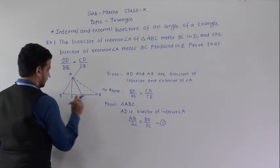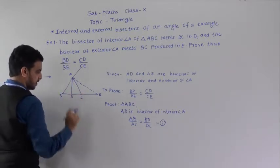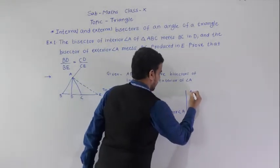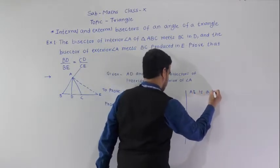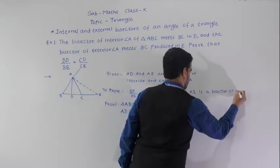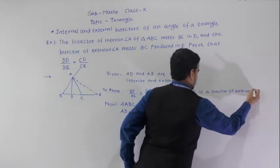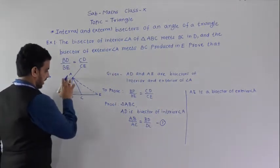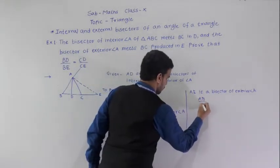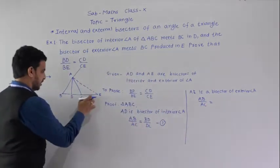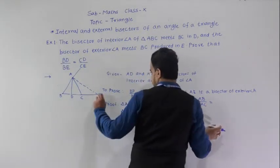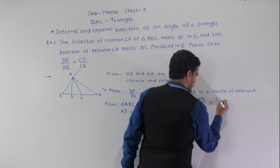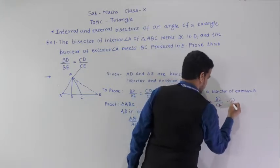Similarly, AE is the bisector of exterior angle A. By the exterior angle bisector theorem, since E divides BC externally, we can write AB/AC = BE/CE. We give this equation number 2.